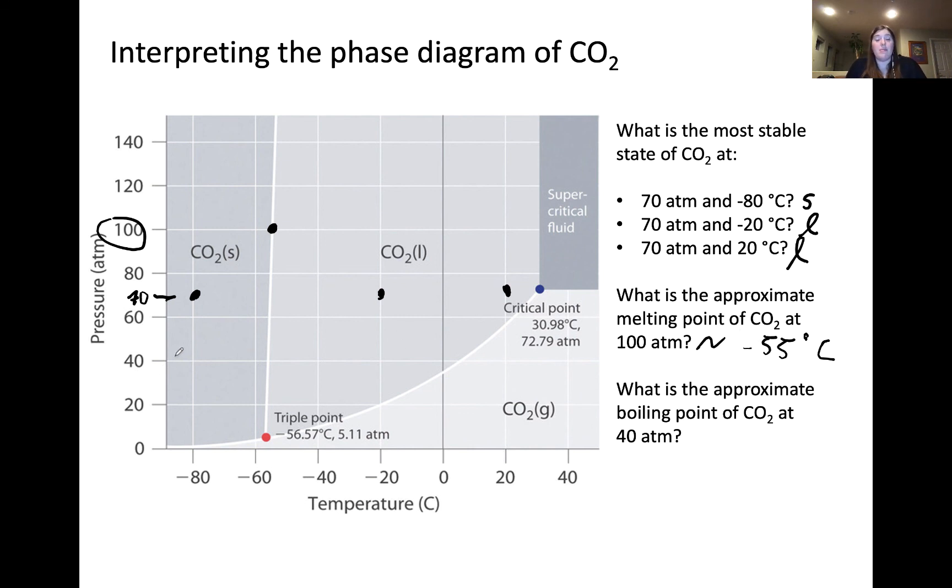Now, let's estimate the boiling point approximately of CO2 at 40 atmospheres. We trace over from 40 atmospheres to the liquid gas line because that's what we're using to approximate the boiling point. It will be this point at which the liquid and gas are at equilibrium at 40 atmospheres. If we draw this line down and approximate, I would say that the approximate boiling point of CO2 at this pressure will be approximately 5 degrees Celsius. Now, importantly, the boiling point will change as a function of pressure based on the position of this liquid gas equilibrium line.